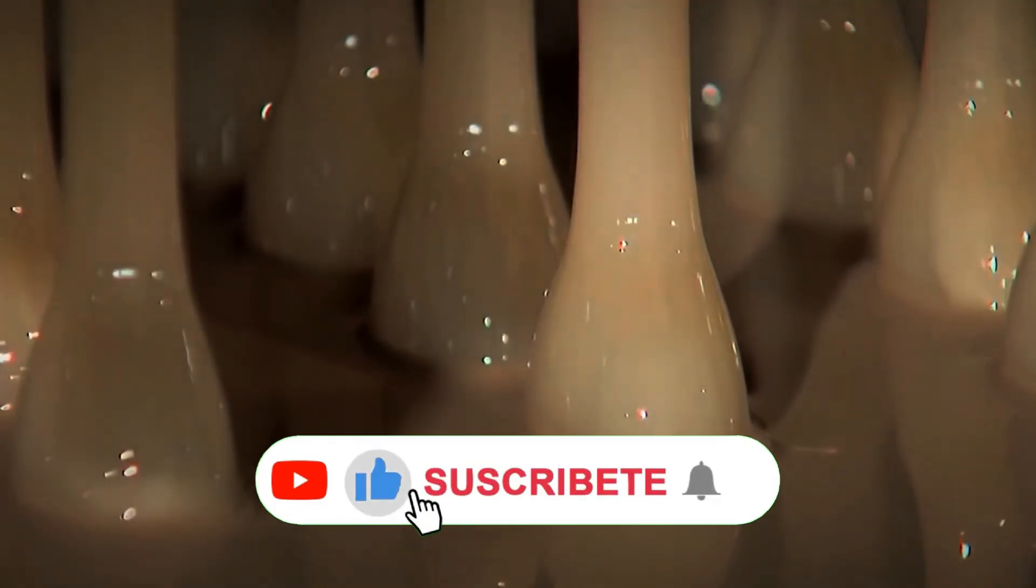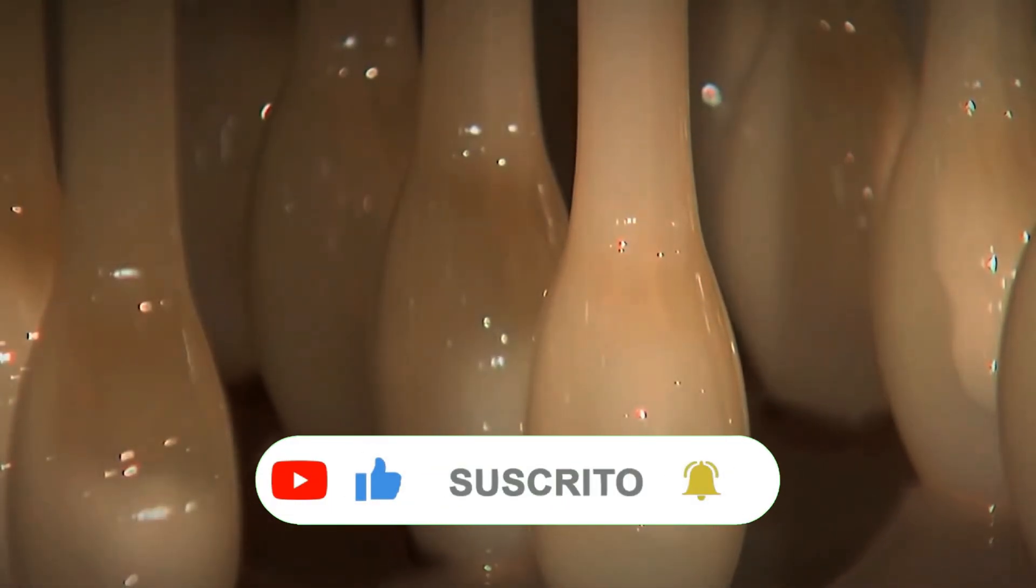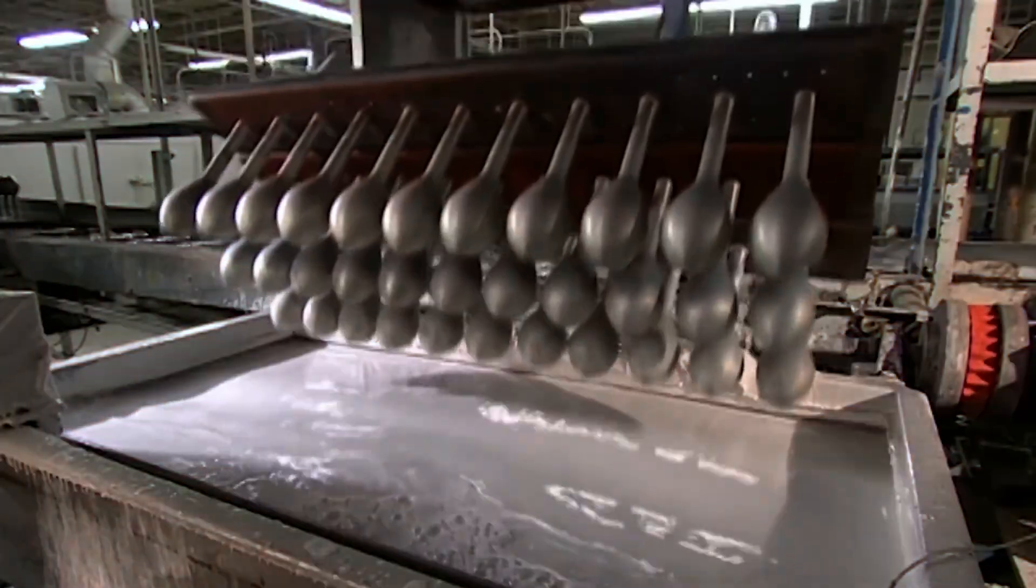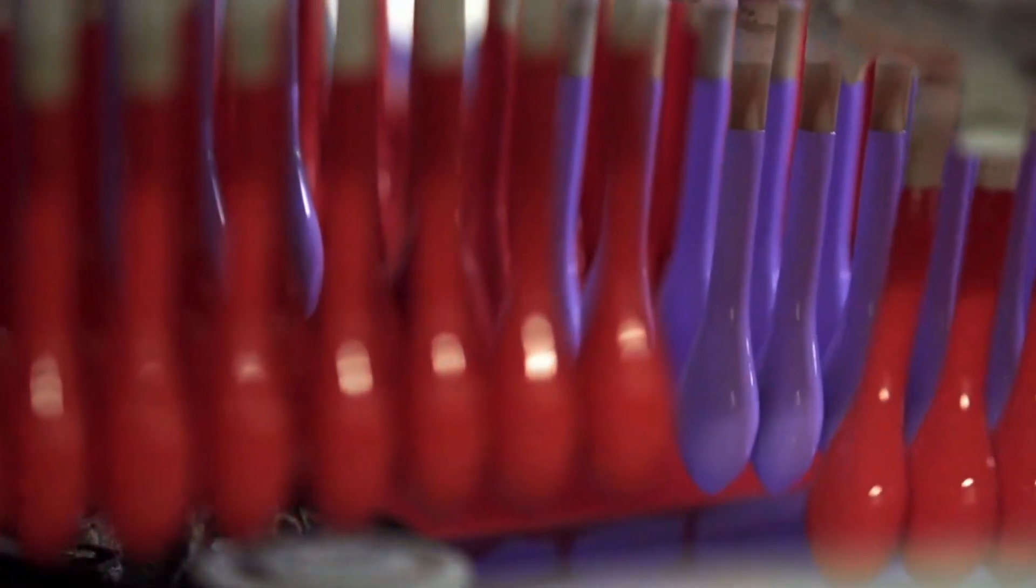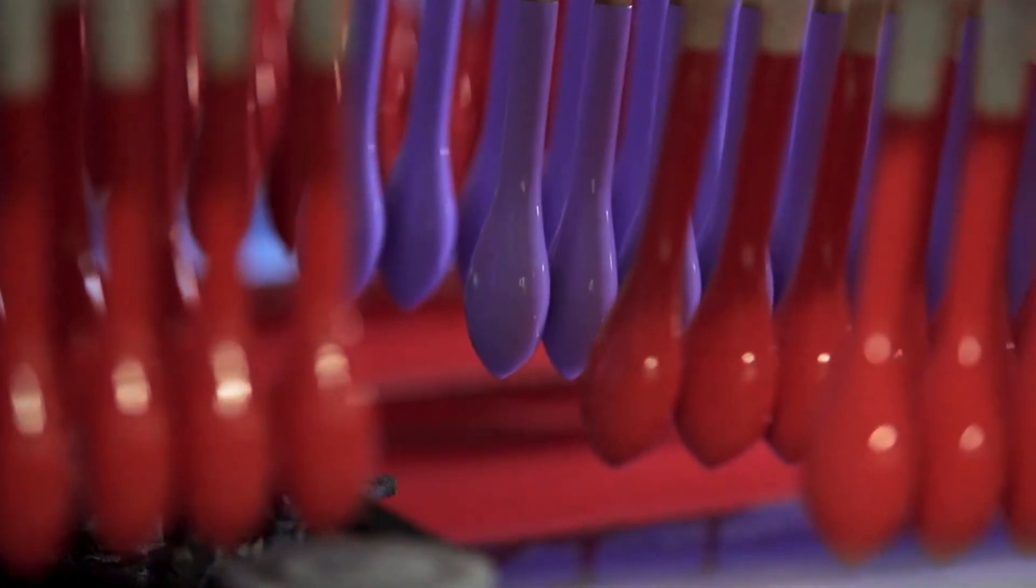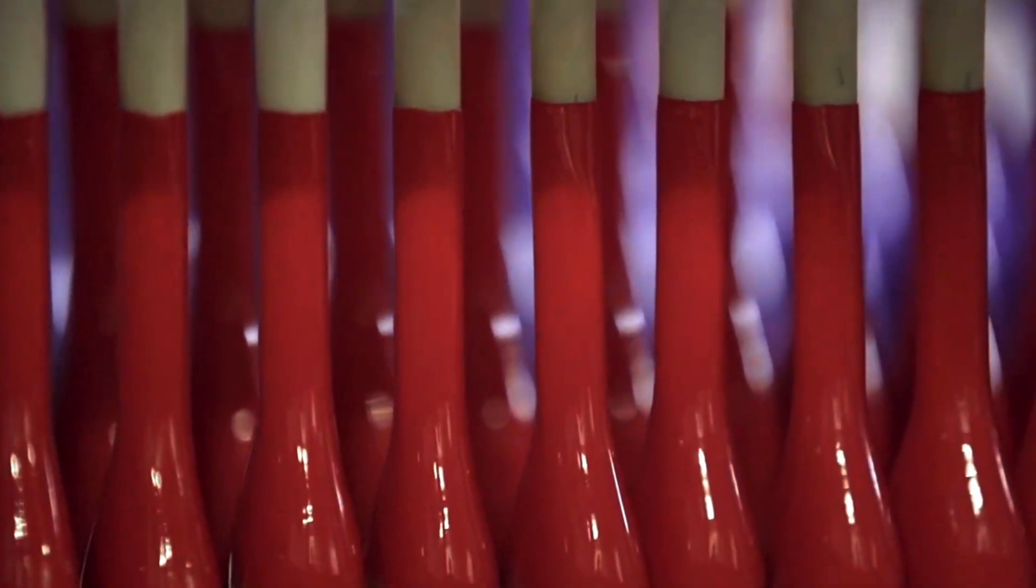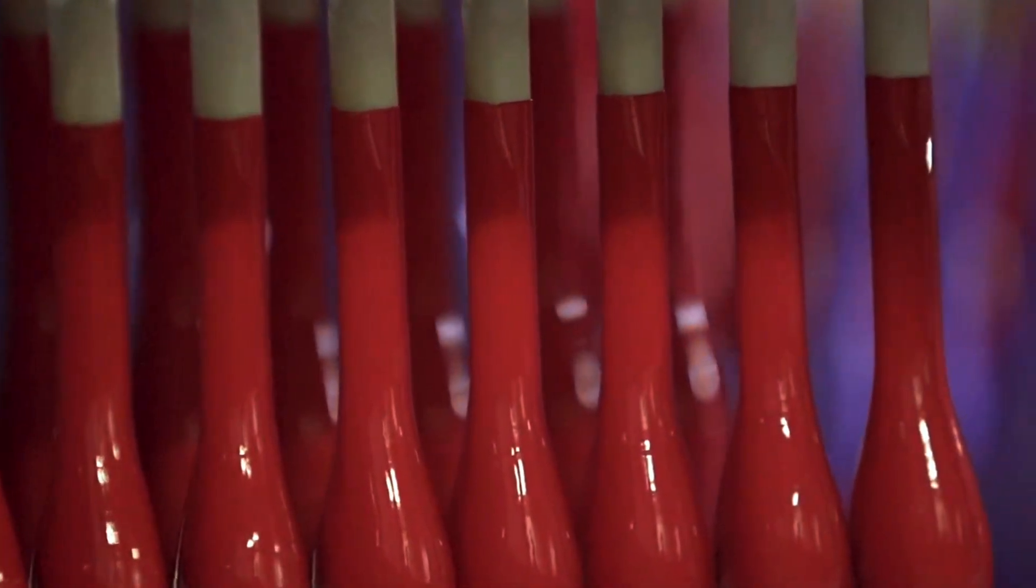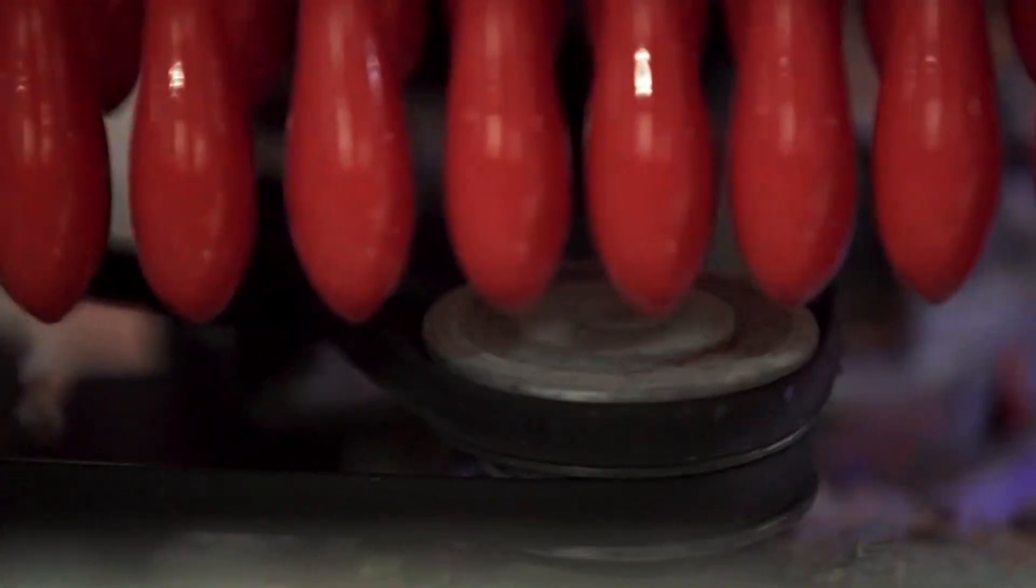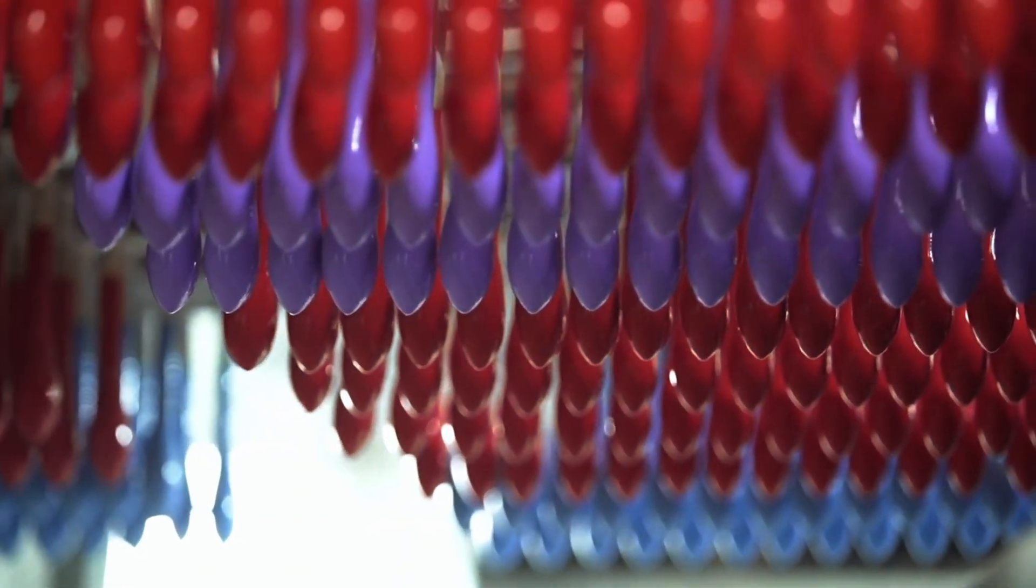Now comes one of the most mesmerizing moments of the process: forming the balloon's skin. From below, a tank full of blue latex slowly rises to fully submerge the molds. It's a brief but critical instant. The duration of the bath and the density of the latex determine how thick or thin the final balloon will be. As the molds emerge, they gently drain the excess latex. And since latex starts drying almost instantly, within minutes you can see a translucent layer, still soft but already shaped.